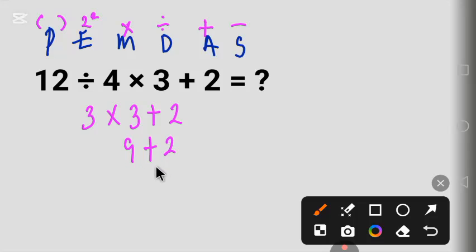In this case we have only plus, so we work the addition. 9 plus 2 equals 11. This is the correct answer.